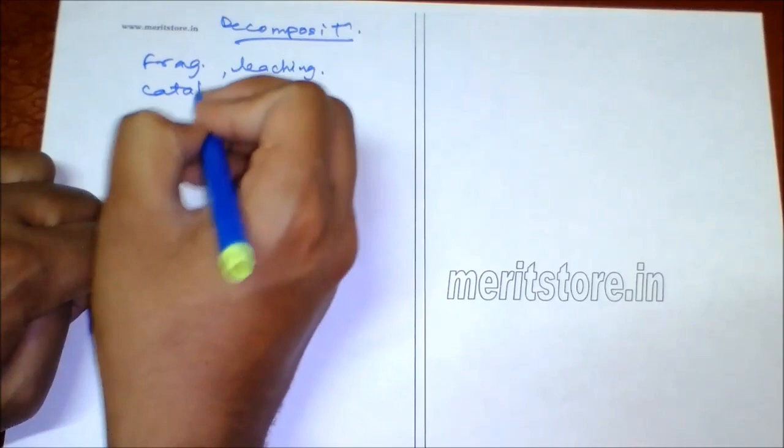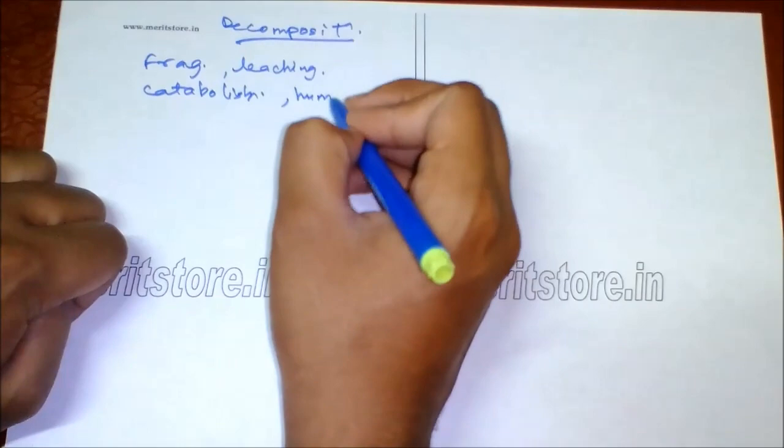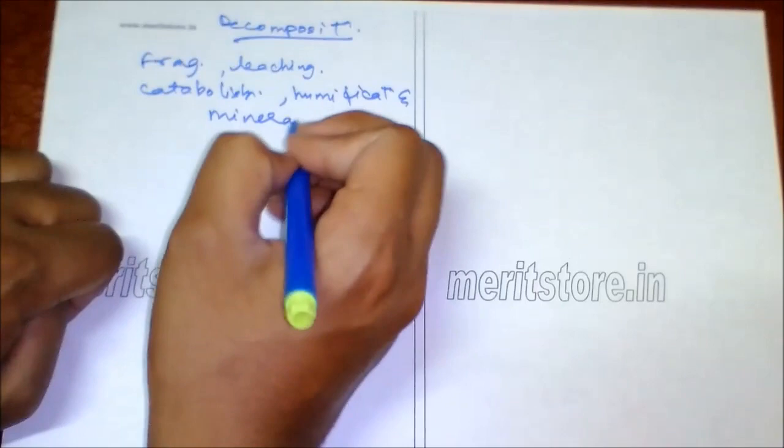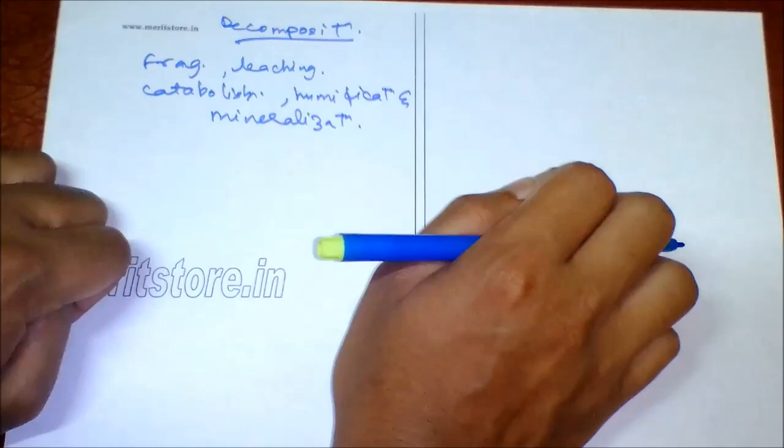Other steps include catabolism, humification, and mineralization. These are important steps in decomposition. Humification is the formation of humus, which is decomposed organic matter, while mineralization is the process of degradation of humus by some microbes.